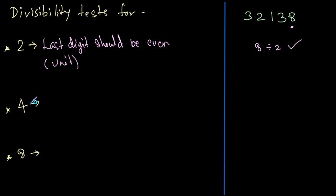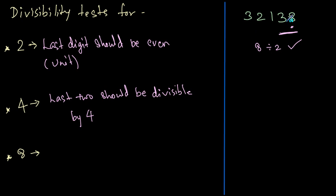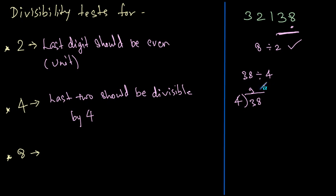Moving on to 4, the condition states that the last 2 digits should be divisible by 4. In this dividend, the last 2 digits are 38. Let's see if 38 is divisible by 4 — 4 nines are 36, so the remainder is 2. Therefore, 38 is not divisible by 4.